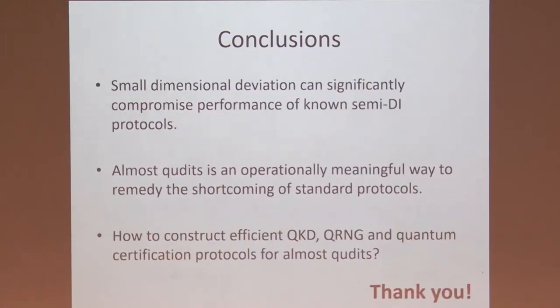So in conclusion, the take-home message from this, is that the small dimensional deviations can quite significantly compromise semi-device-independent quantum information protocols, no matter if it's in certification of measurements, randomness, QKD, or probably many other expectations as well. An attempt to resolve this is our definition of the almost qudit system, which is an operational way of addressing these shortcomings. And a natural open problem for this is then how one can construct efficient semi-device-independent protocols for things like QKD and QRNG that are robust to these types of perturbations. Thank you for your attention.